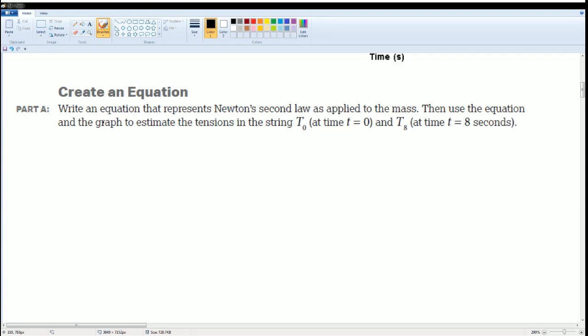So first of all, you're going to write an equation that represents Newton's second law as applied to the mass, and estimate the tension. So let's take a look. We should know that the summation of all the forces in the y direction is going to be equal to mass times acceleration in the y direction. The two forces that make this up is the force of gravity minus the force of tension, equal to mass times acceleration in the y direction.